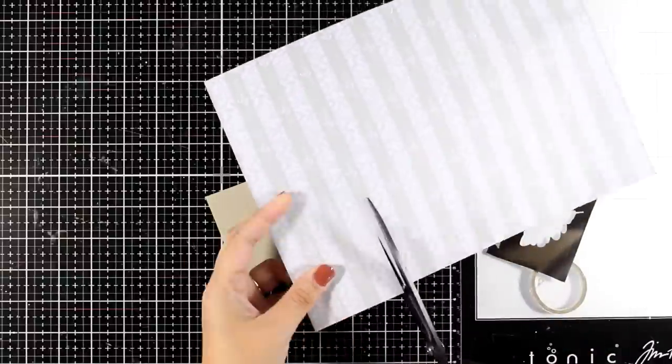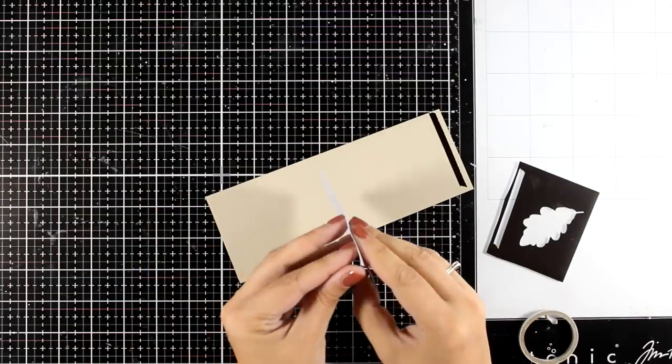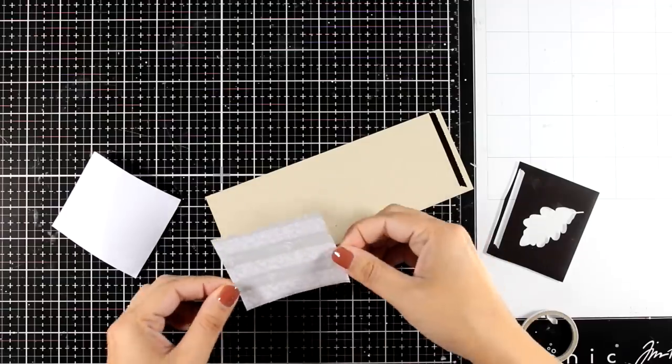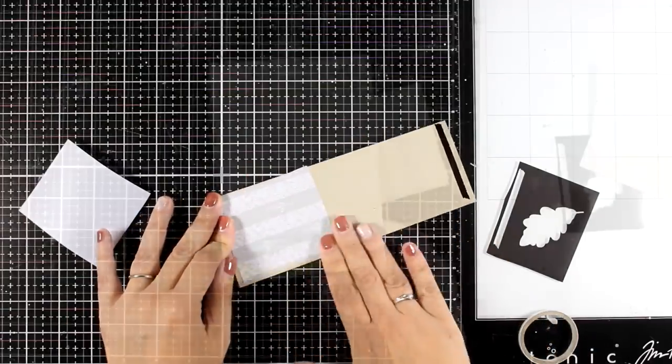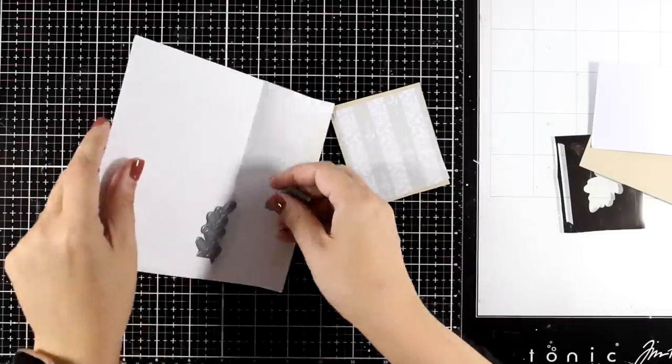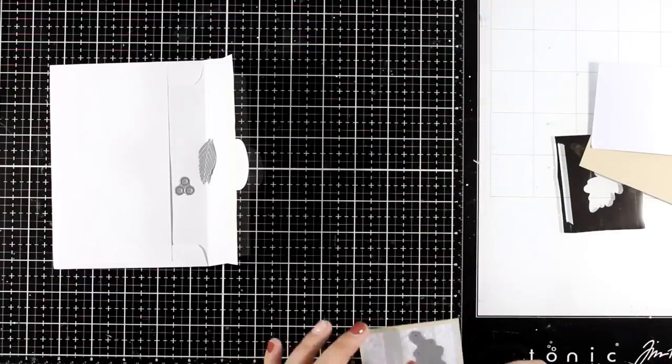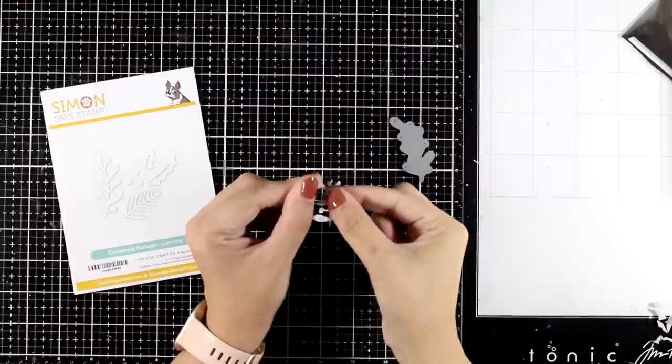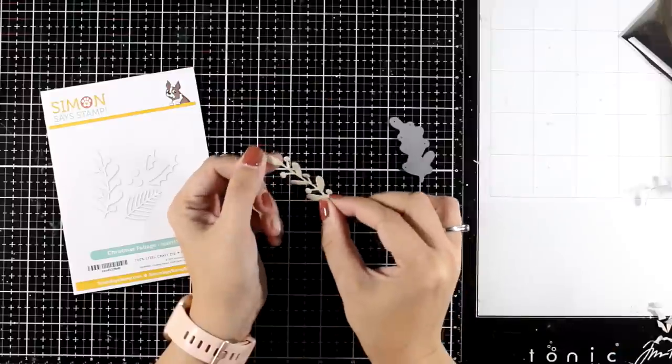Another thing that you can do is to turn any die that you have into a foiled piece. So just use some double-sided paper - this is a tape adhesive but it is white as you can see. I'm going to stick it down on a piece of scrap cardstock so that I can show you the technique, and then die cut any of your dies on this piece of cardstock. This is going to create a little design that has adhesive at the top.